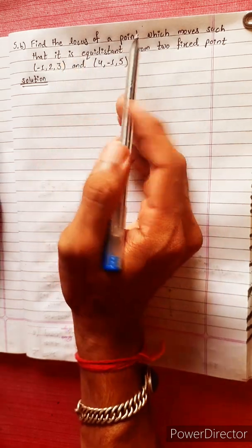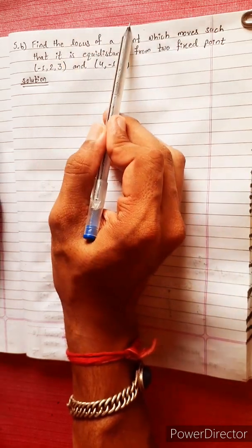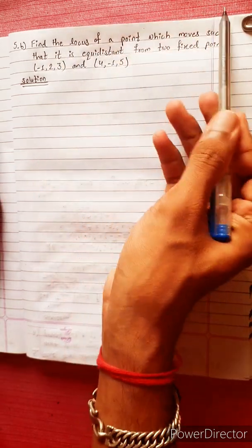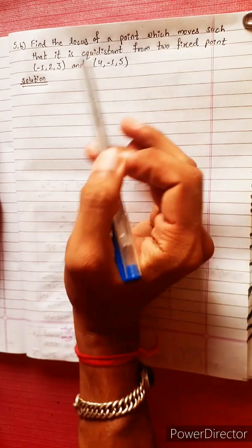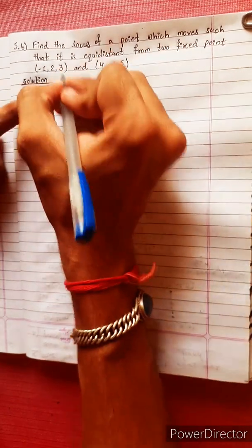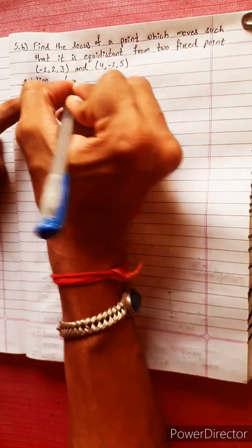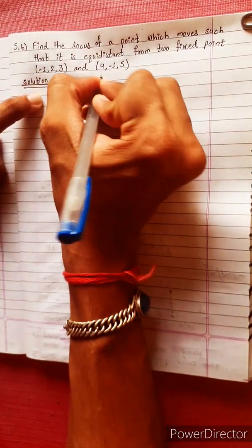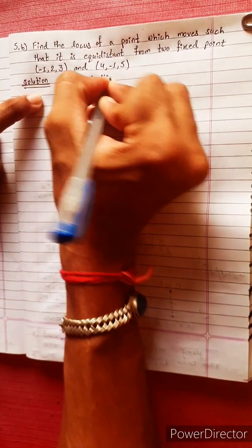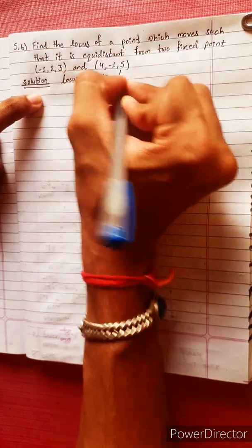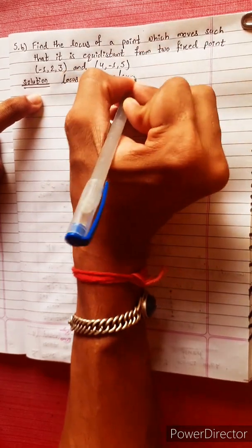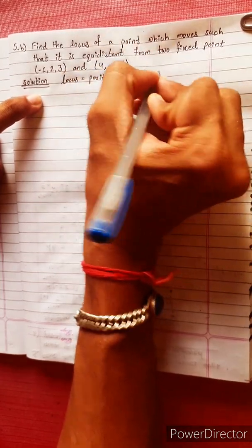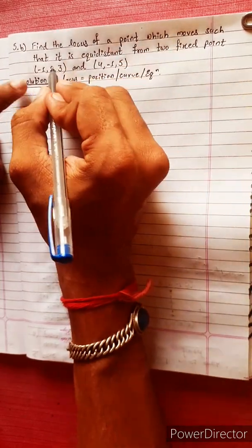Find the locus of a point which moves such that it is equidistant from two fixed points. Locus is the line of position — what is the curve? What is the equation? What is the locus?